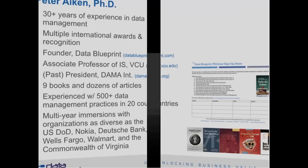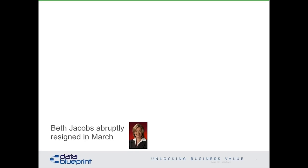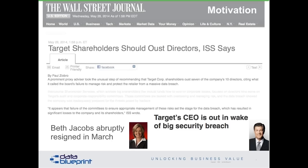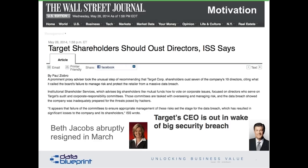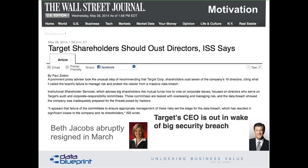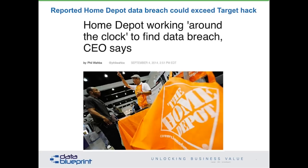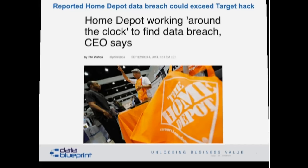Most people aren't really aware of data governance. Does anybody know who Beth Jacobs is? She's the former CIO of Target. Of course, they also lost their CEO due to a data problem, and it went all the way up to the board of directors where the audit committee was said to have acted irresponsibly in ignoring the signals. So we're getting a little bit more play in the C-suites. Home Depot is working around the clock to find a data breach — it looks like it might be bigger than Target. This data stuff is becoming a little bit more important, and luckily the people at the top are listening.